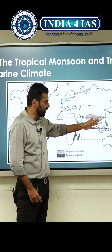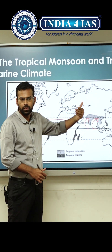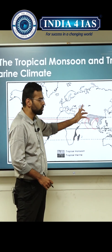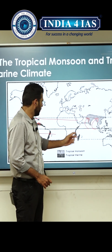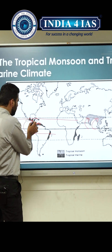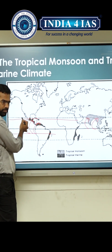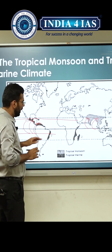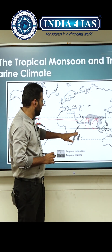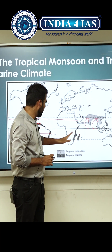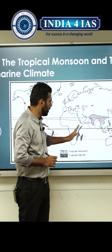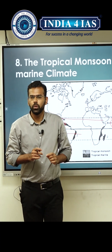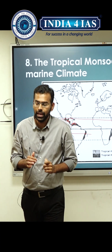For example, even Malaysia and Thailand region receive monsoon rainfall. Here is the Central American region — there you also have monsoon. Again, in the Africa region, South American region, and Australia region, you will also get monsoon rainfall.